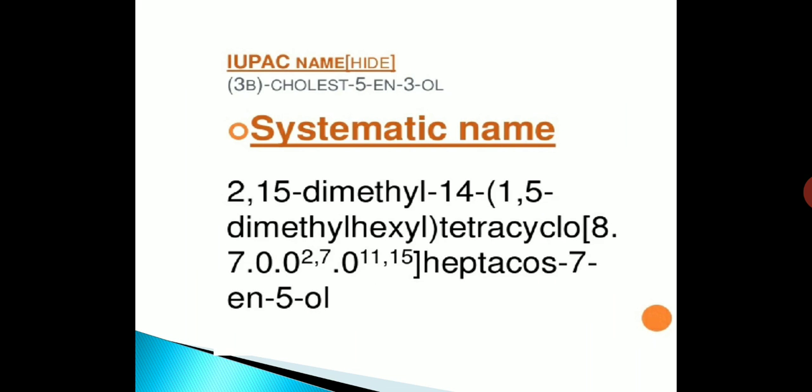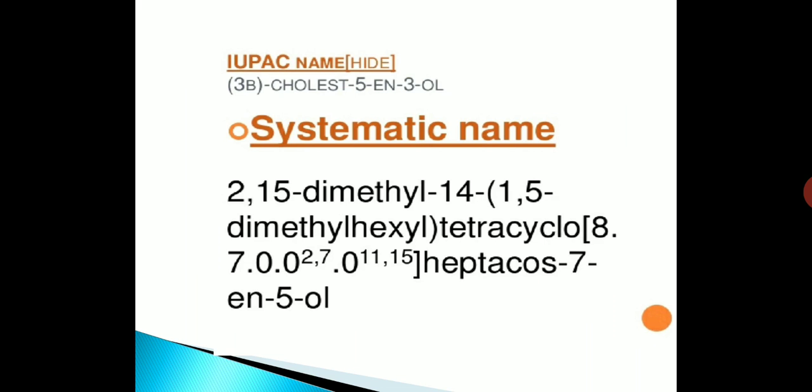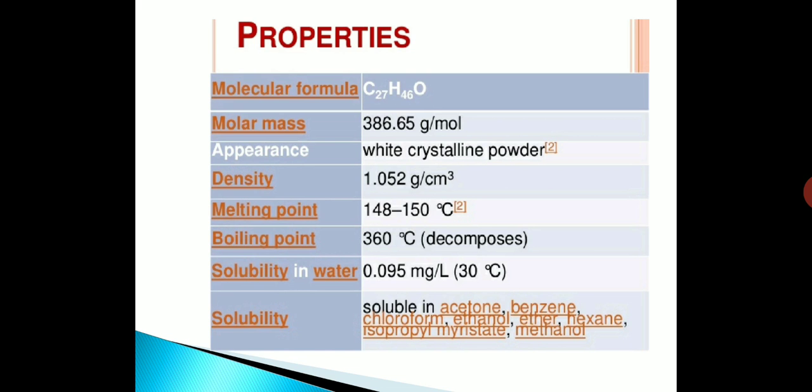So IUPAC name of cholesterol is 3 beta-cholest-5-en-3-ol and the systematic name is 2,15-dimethyl-14-tetracyclo-hectacos-7-3-ol. Other names are cholesterin, cholesterol alcohol.